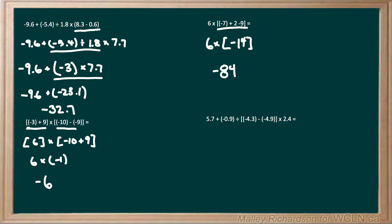Moving on to our final example, we have 5.7 plus negative 0.9 divided by negative 4.3 minus negative 4.9, times 2.4. We have to start with everything inside our brackets. We have negative 4.3 minus negative 4.9, and this minus negative turns into a positive. So we have negative 4.3 plus 4.9, which leaves us with 0.6, and then we multiply that by 2.4.